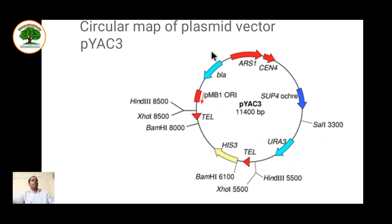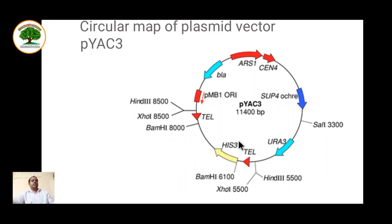This is the circular map of the plasmid YAC vector, around 11,400 base pairs. You can see that the pMB1 ori site helps in replication in bacteria, and the ARS sequence is the autonomously replicating sequence for yeast. CEN4 is the centromeric gene which makes it a chromosome in yeast. There is also presence of the SUP4 ochre gene, the uracil biosynthesis gene, telomere gene, and HIS3 gene. The two telomeres help in replication in both E. coli and yeast.